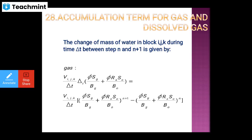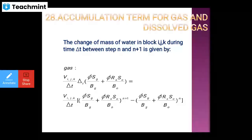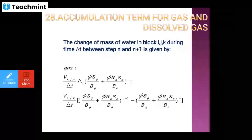Then accumulation term for gas and dissolved gas: the change of mass in block IJK during time delta-T between step n and n+1 is given, for gas, by V_ijk divided by delta-T multiplied by delta(phi · R_s · S_o / B_o) for dissolved gas, and phi · S_g / Bg for free gas. All the formation volume factors for oil and gas, porosity, change in time, and volume are included.